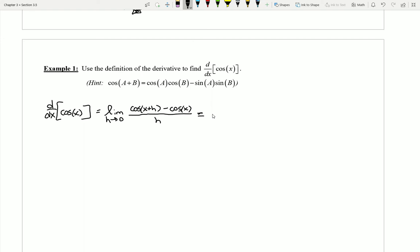The first thing I'm going to do is replace my cosine of x plus h using the identity that I have up above. So it's going to be cosine of x cosine of h minus sine of x sine of h and then minus cosine x that's still up there in the numerator.